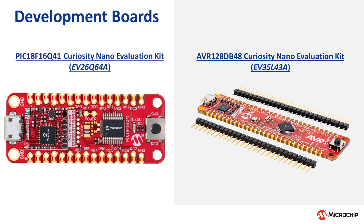This video will cover demonstrating the PIC18Q41 and AVRDB Curiosity Nano development kits with the factory default programming. Future Curiosity Nanos may come with pre-installed demos showcasing features of the new product family. Out of the box, both boards have been pre-programmed to showcase the op-amp peripherals on the device. You can learn more about the integrated op-amps and their basic electrical configurations by checking out the video playlist in the pop-up above.